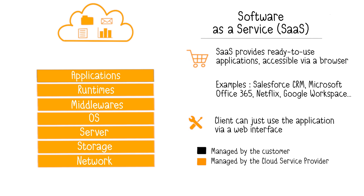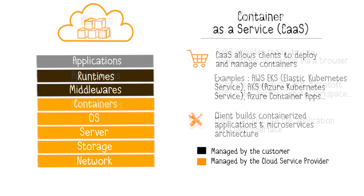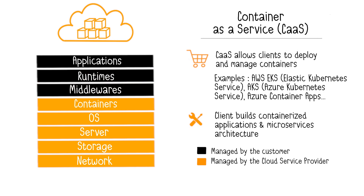Now let's talk about two new cloud models that are very trendy. The first model is Container as a Service. The specificity of this service is container technology, and Docker is the most popular containerization technology. Containers are isolated and separated execution environments at the operating system level. Container as a Service allows clients to deploy and manage containers throughout their life cycle. This mainly includes starting and stopping containers, grouping them into clusters, scaling containers, load balancing, automated updates, and failover procedures. There is often confusion between Platform as a Service and Container as a Service.